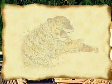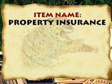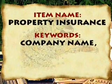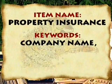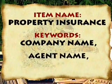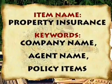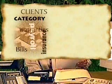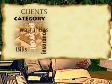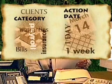the easier it becomes to find the file later. For example, if you're filing a building insurance policy, the item name might be 'property insurance,' and the keywords could be the insurance company name, the agent name, and the specific items the policy covers. In addition, you can enter a category such as 'administrative' and an action date to increase your ability to access and use the information at the right time.